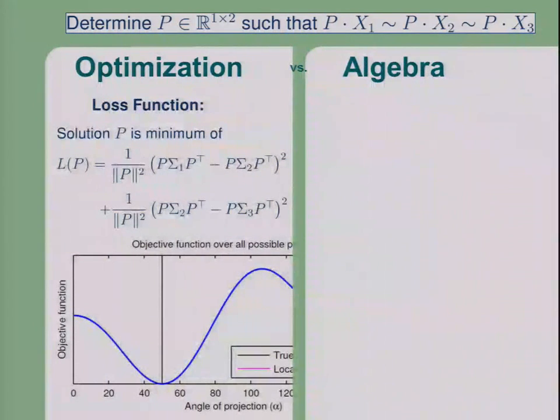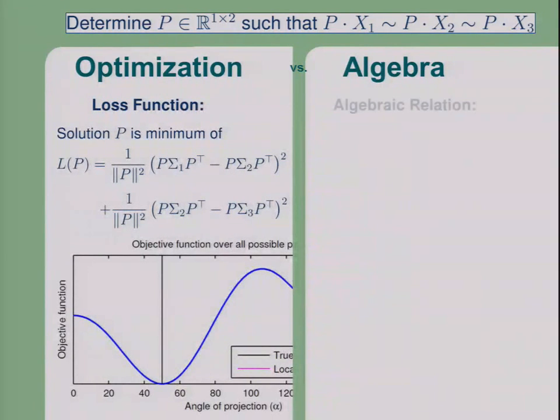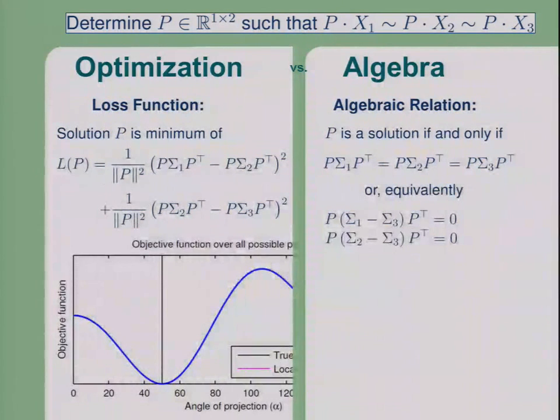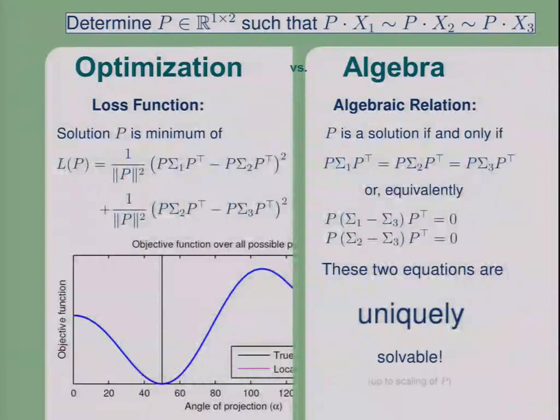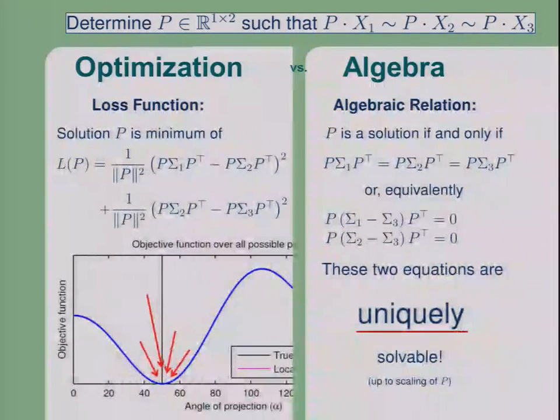Now, in this example, we can also do something with algebra. Algebra basically is about relations. Do we have any relations in this example? Yes. We put those relations in the loss function, but then the loss function somehow forgets about those relations. The solution is uniquely characterized by those two equations. The loss function mirrors that, but in fact, we can uniquely solve those two equations. If you have a way to solve those two equations, then we can just get immediately to the global minimum.